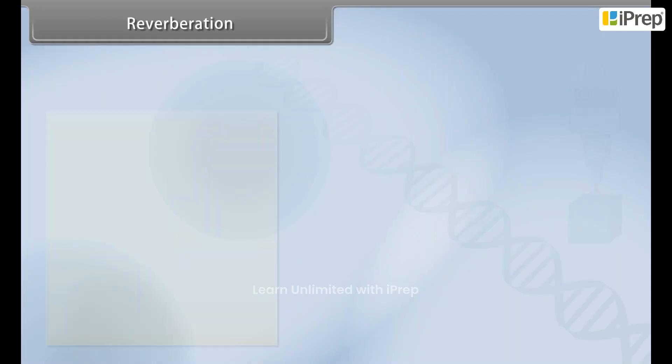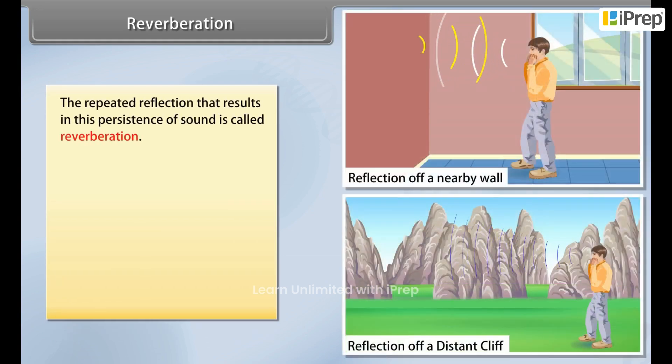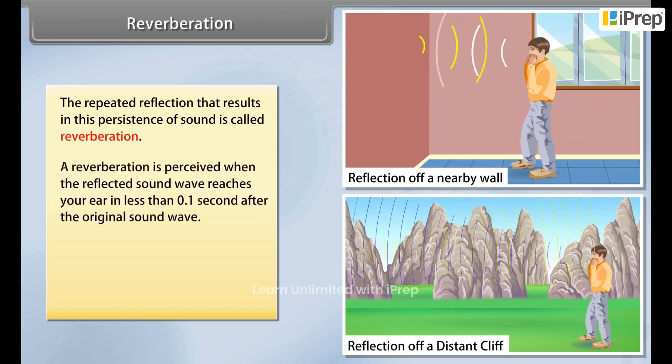Reverberation. The repeated reflection that results in this persistence of sound is called reverberation. A reverberation is perceived when the reflected sound wave reaches your ear in less than 0.1 second after the original sound wave.